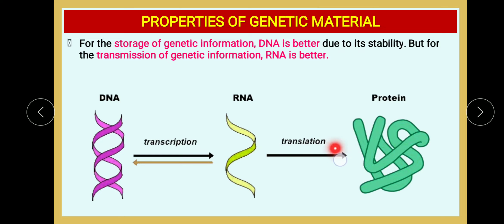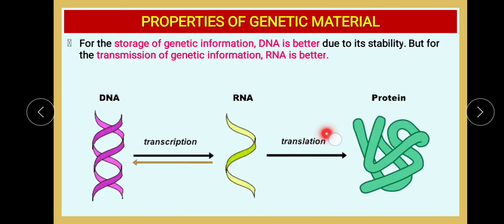Even though genetic information is stored in DNA, it has to be converted into RNA, and that RNA undergoes translation to form protein. This is what we call the central dogma — the pathway for the transfer of genetic information. DNA undergoes transcription to form RNA; RNA undergoes translation to produce protein. The process of conversion of DNA to RNA is called transcription, and the conversion of RNA to protein is called translation.